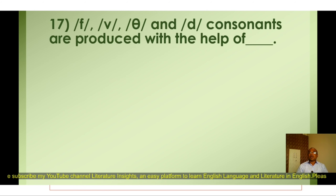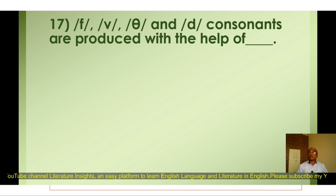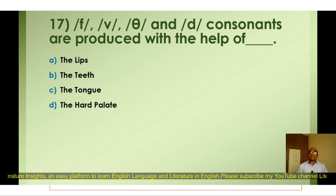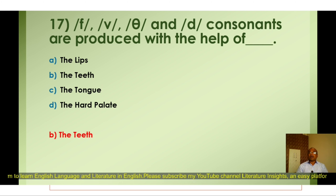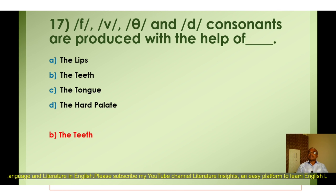Question number seventeen: The consonants f, v, th and similar consonants are produced with the help of — A) The lips, B) The teeth, C) The tongue, D) The hard palate. The correct option is B) The teeth. While producing f, v, th consonants, we are using the teeth.